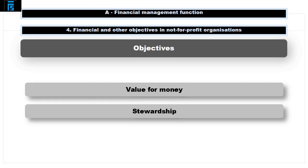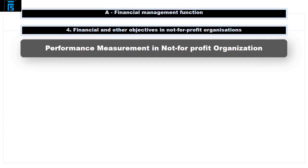For example, if a government transport department received government funding to build a road, that is where the money must be spent — not on finishing off, say, a railway station.